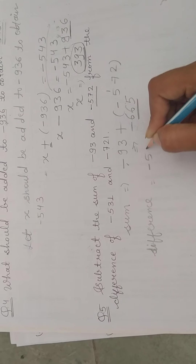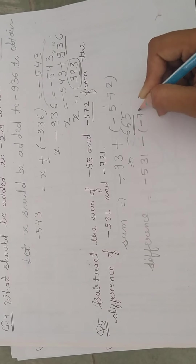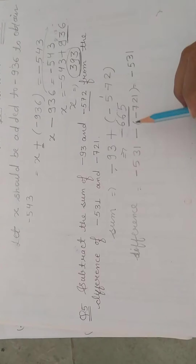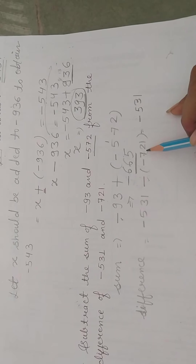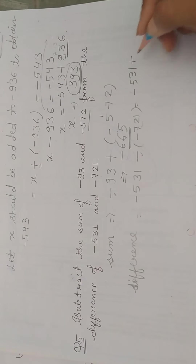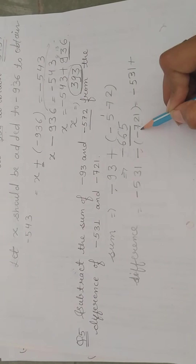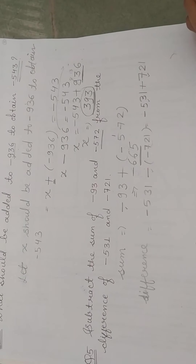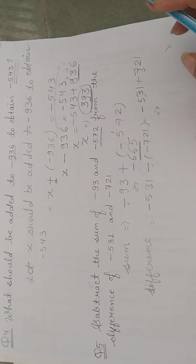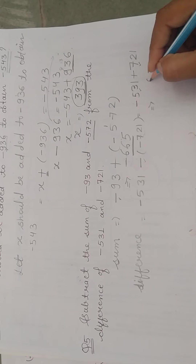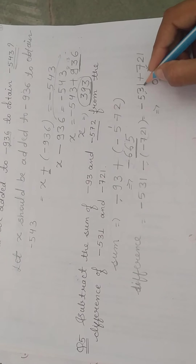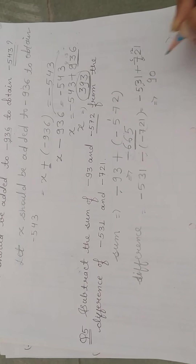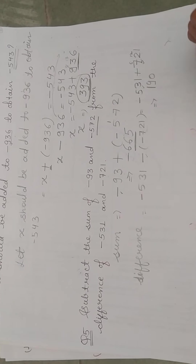अब हम difference निकालेंगे: minus 531 को हम subtract करेंगे minus 721 से। जब bracket के बाहर minus का sign होता है तो अंदर का sign change हो जाता है — यहां addition का sign है, bracket के अंदर का sign minus है, so the digit becomes plus. First integer is negative and second integer is positive — signs are opposite, so subtraction is performed. 1 minus 1 is 0; 2 minus 3 — cannot subtract, so we borrow: 12 minus 3 is 9; 6 minus 5 is 1. Answer is 190.